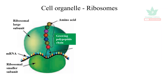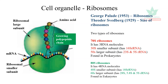The next organelle is ribosomes, which have a larger subunit and a smaller subunit, and are concerned with protein synthesis. George Palade described ribosomes in 1953. The subunits are named and numbered based on the Theodor Svedberg units. In prokaryotes, there are 70S ribosomes with three RNA molecules, consisting of 30S and 50S subunits.